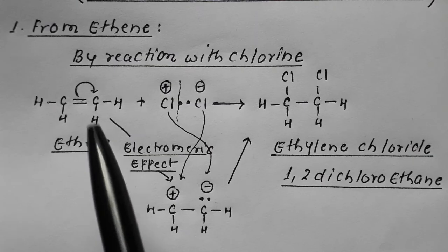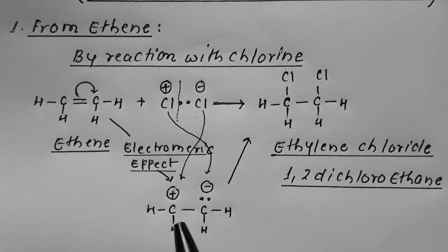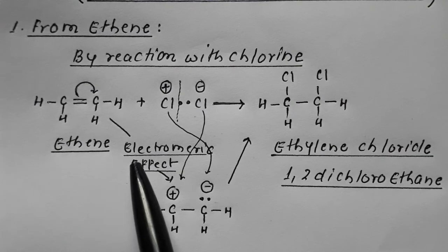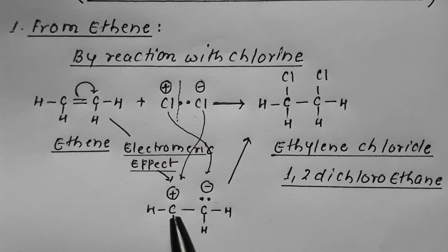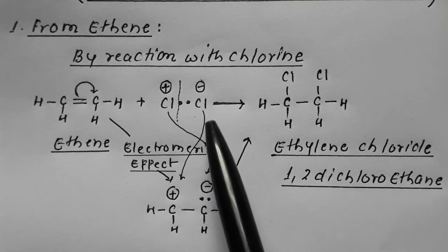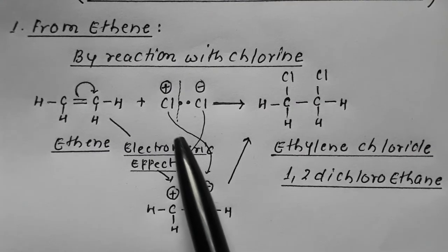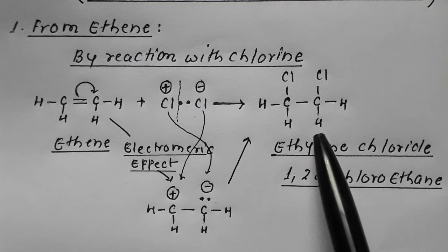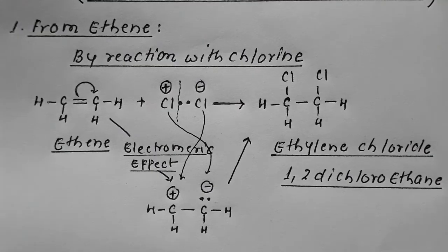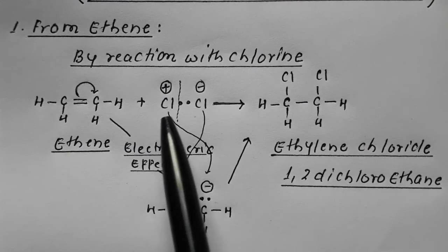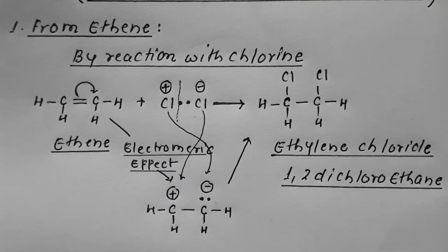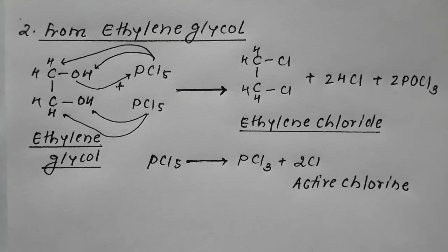As a result of the electromeric effect, one carbon develops a negative charge and the other develops a positive charge. The negative chlorine combines with the positive carbon, and the positive chlorine combines with the negative carbon, giving the final product. This is how ethene is converted into 1,2-dichloroethane — the vicinal halide.